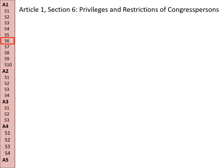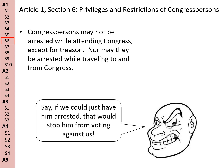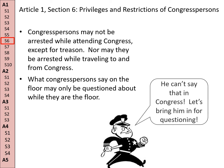Section 6: Privileges and Restrictions of Congresspersons. Congresspersons may not be arrested while attending Congress, except for treason, nor may they be arrested while traveling to and from Congress. This is to prevent people from arresting a Congressperson just to keep them from voting — they might arrest them even though they can't bring them to trial, just to keep them from casting that vote. And what Congresspersons say on the floor of Congress can only be questioned about while they're on the floor; they can't be brought in for questioning by the police.